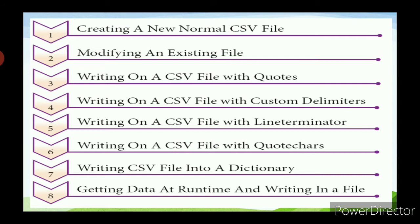We have eight types here: first, creating a new normal CSV file; second, modifying an existing file; third, writing a CSV file with quotes; fourth, writing a CSV file with custom delimiters; fifth, writing a CSV file with a line terminator; sixth, writing a CSV file with quote characters; seventh, writing a CSV file into a dictionary; and eighth, getting data at runtime and writing it to a file.